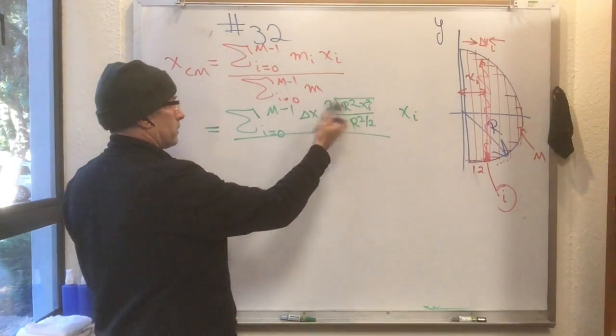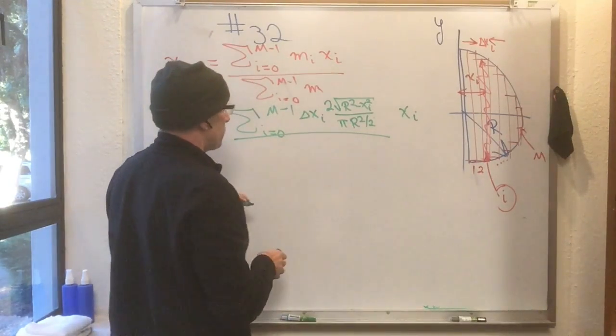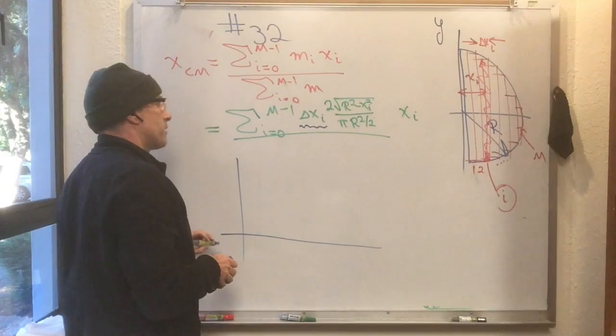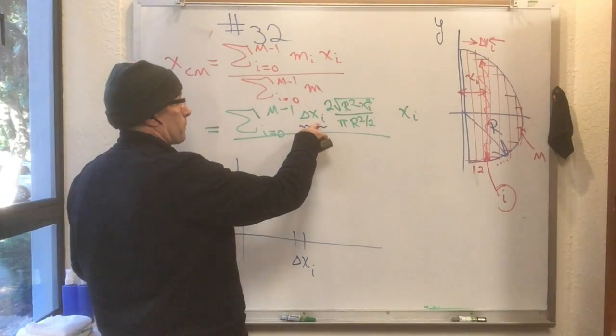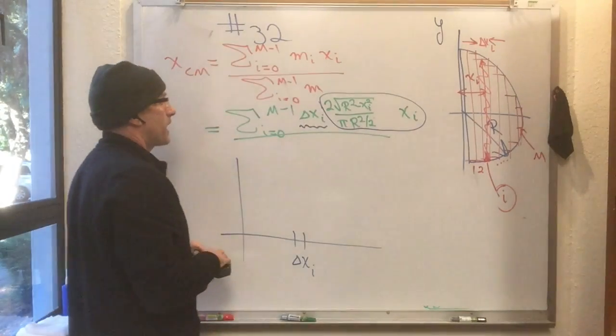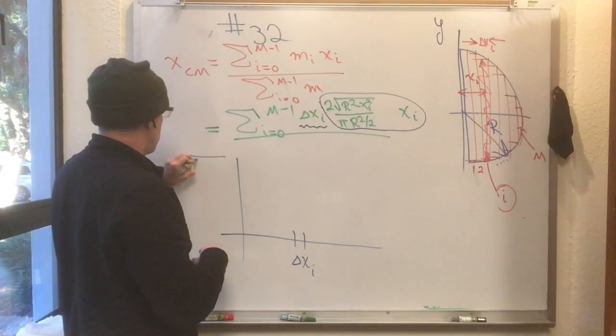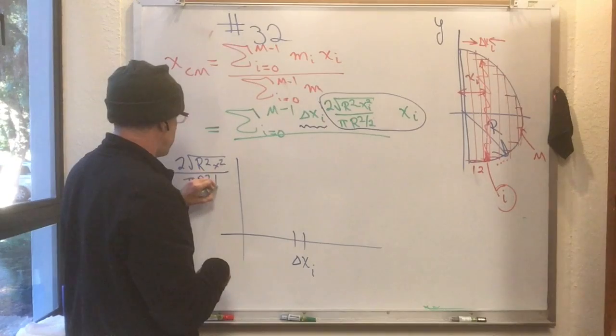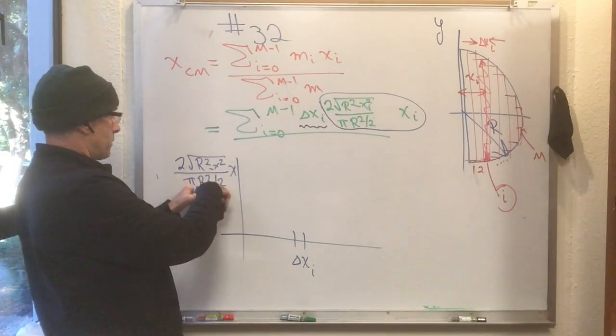Now, this thing here, this is kind of nasty, but it has an interpretation of being a Riemann integral. If you take this to be the width of a strip in a Riemann integral, and you graph what function this is, the Riemann integral of, okay, so there's the width of the i-th strip. This here, this whole mess here, that becomes the height of the i-th strip. So, if we define the function to be 2 root r squared minus x squared over, well, we still got this pi r squared over 2 garbage here, and we have x, okay? That's the function, r squared minus x squared pi r squared over 2, x.